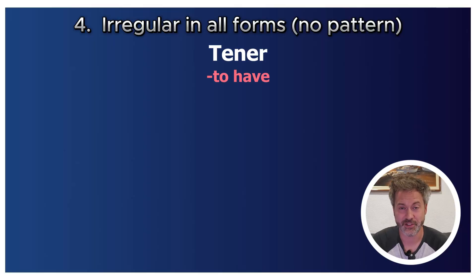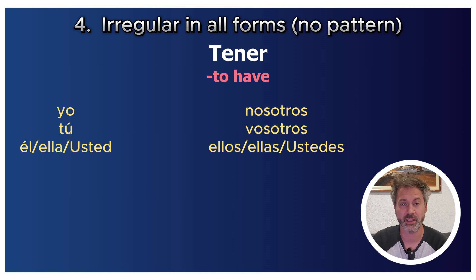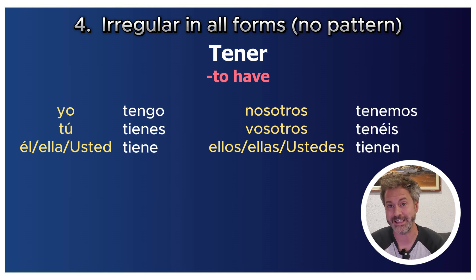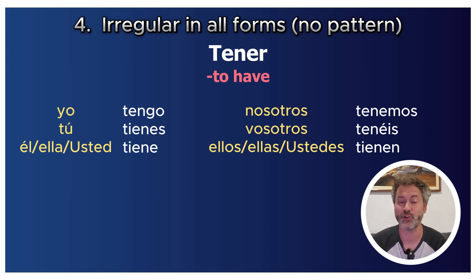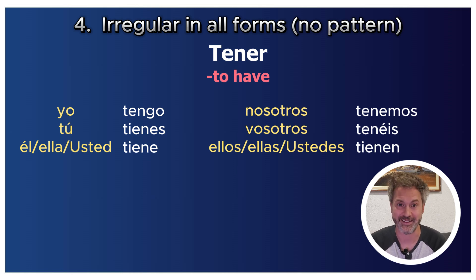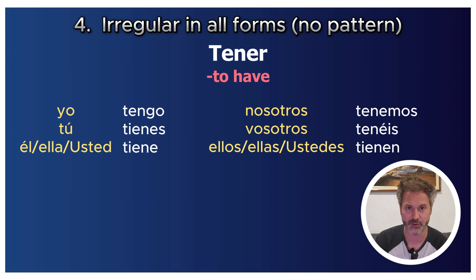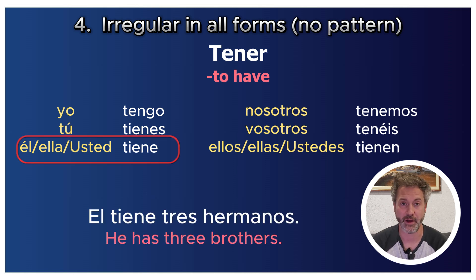Tener combines a yo-form ending change and a stem change: yo tengo, tú tienes, él/ella/usted tiene, nosotros tenemos, vosotros tenéis, ellos/ellas/ustedes tienen. Nosotros and vosotros are regular. For example: 'Él tiene tres hermanos' — He has three brothers.